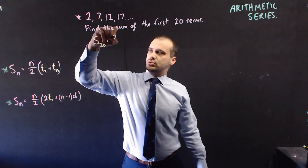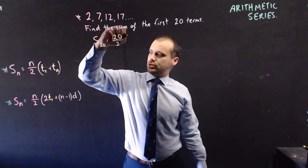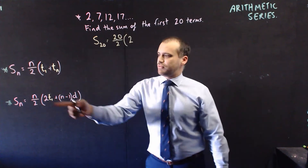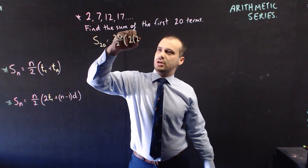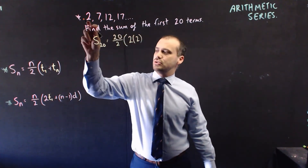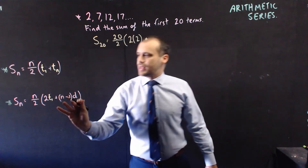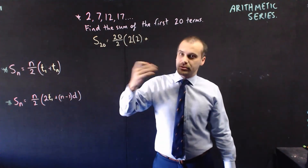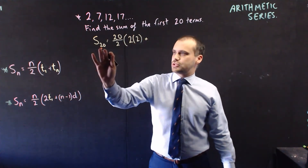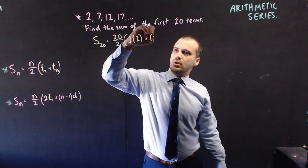Bracket, 2 times the first number. The first number is 2. Plus N minus 1, so the number of numbers, which is 20 — 20 minus 1, which is 19.